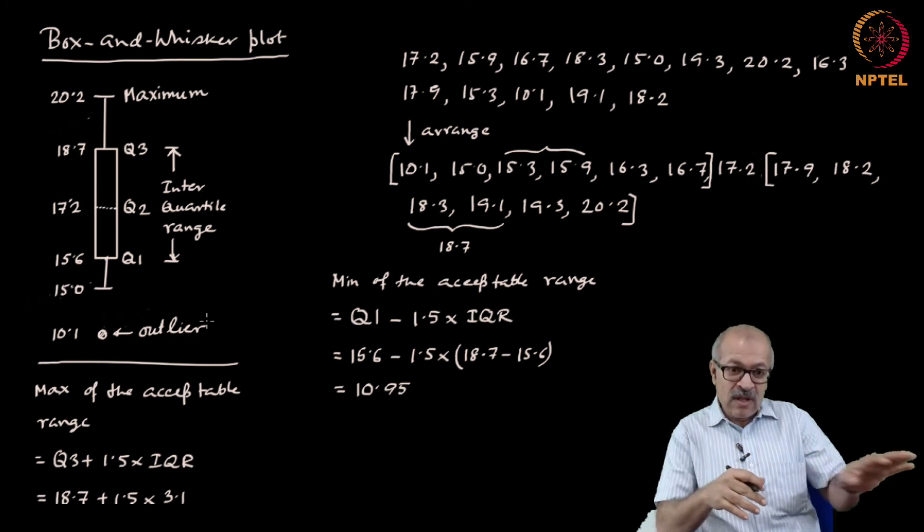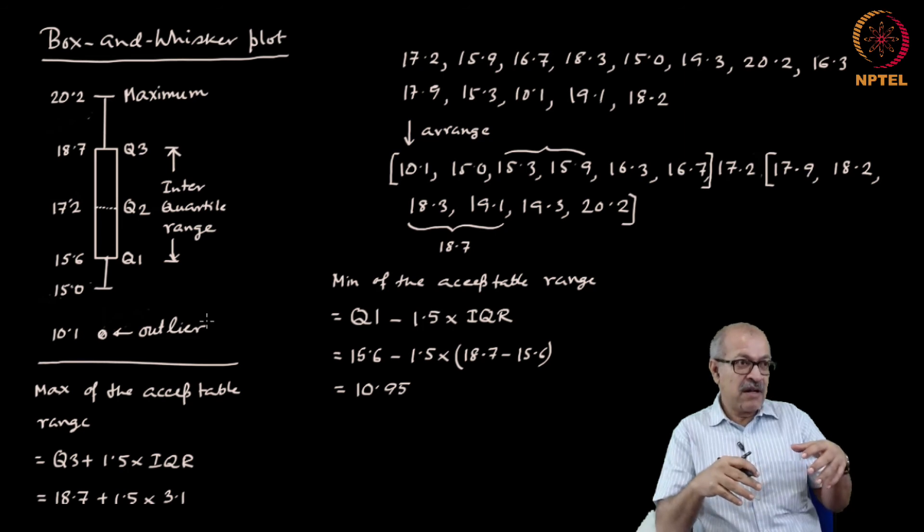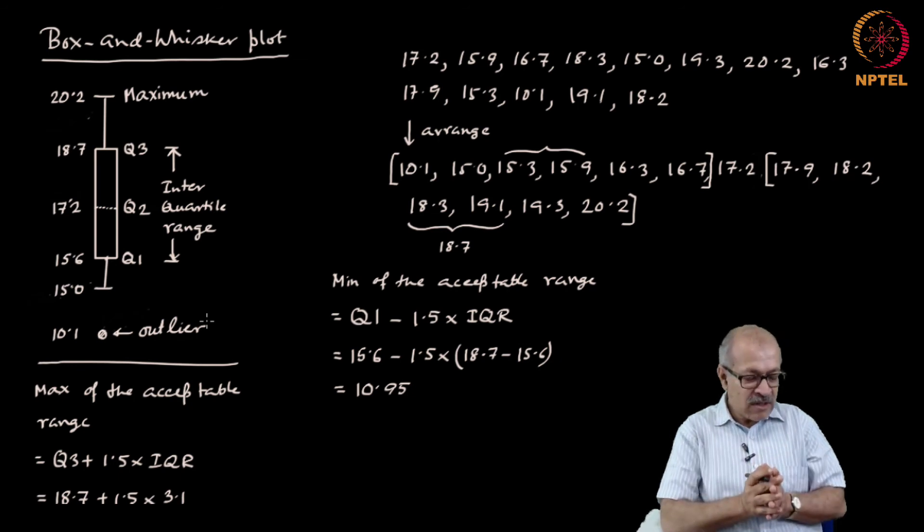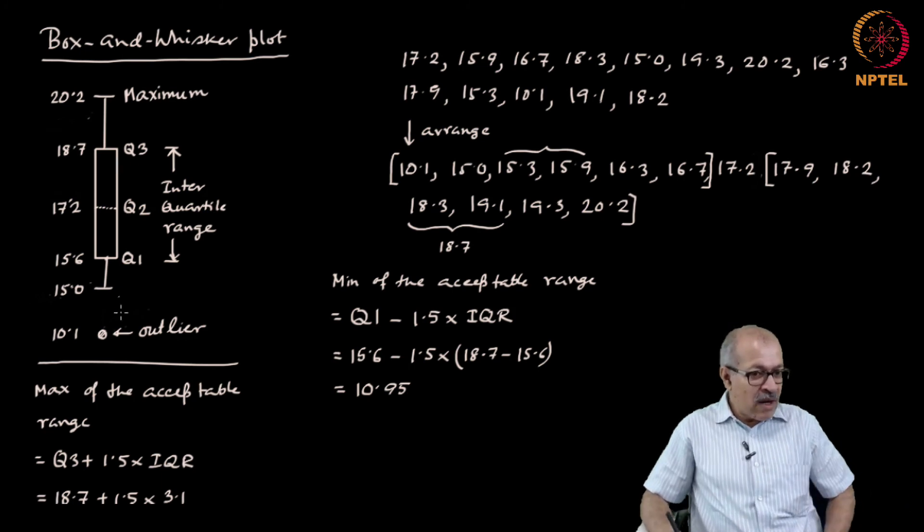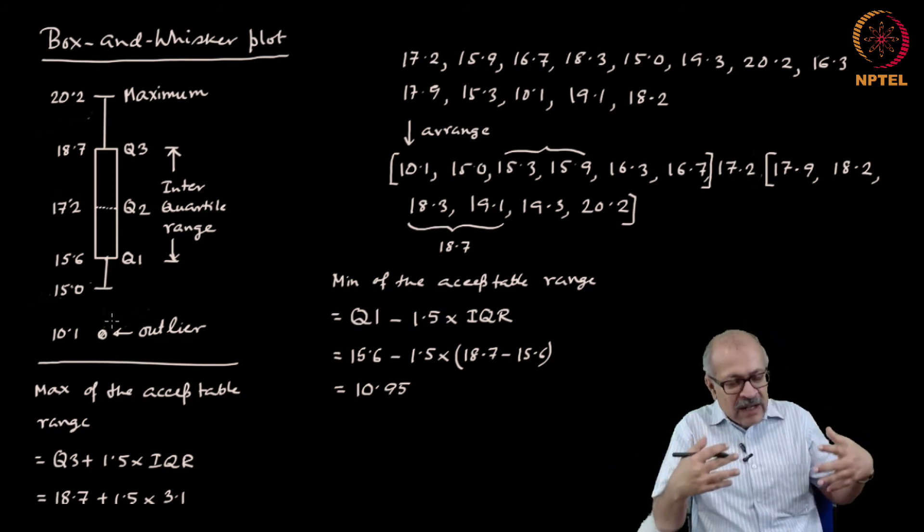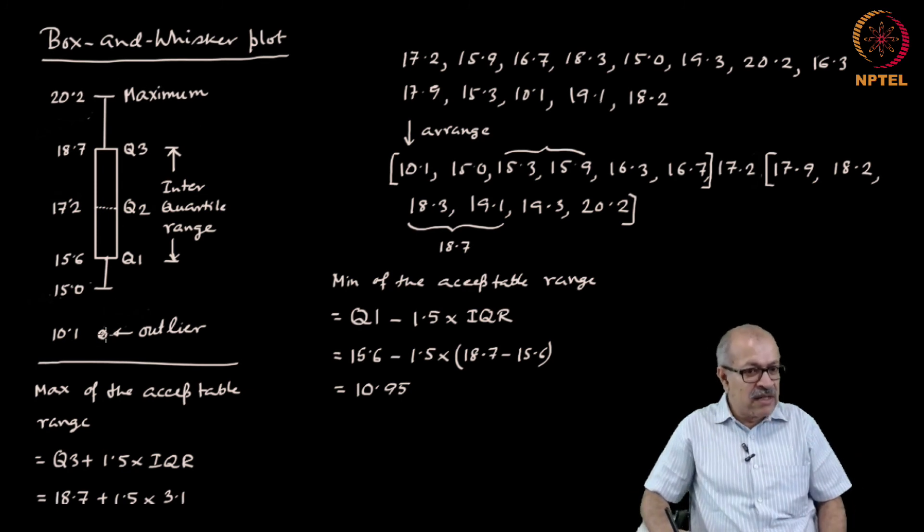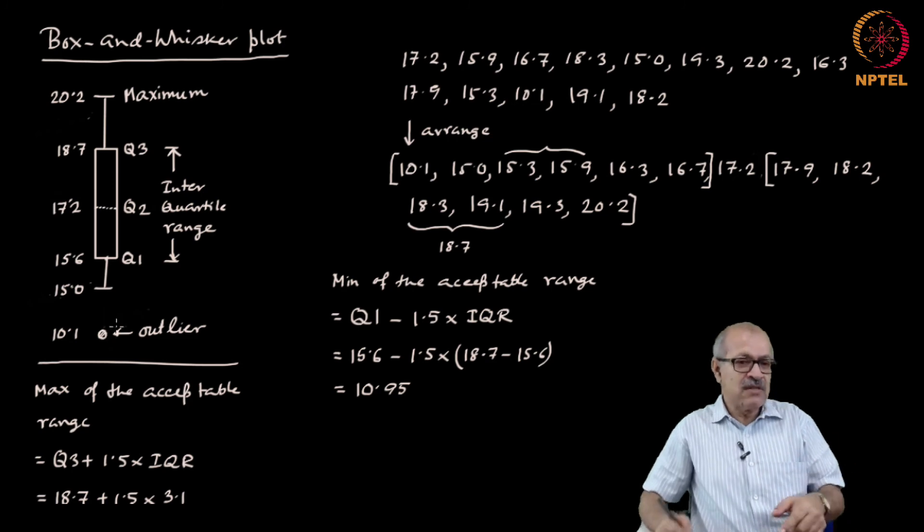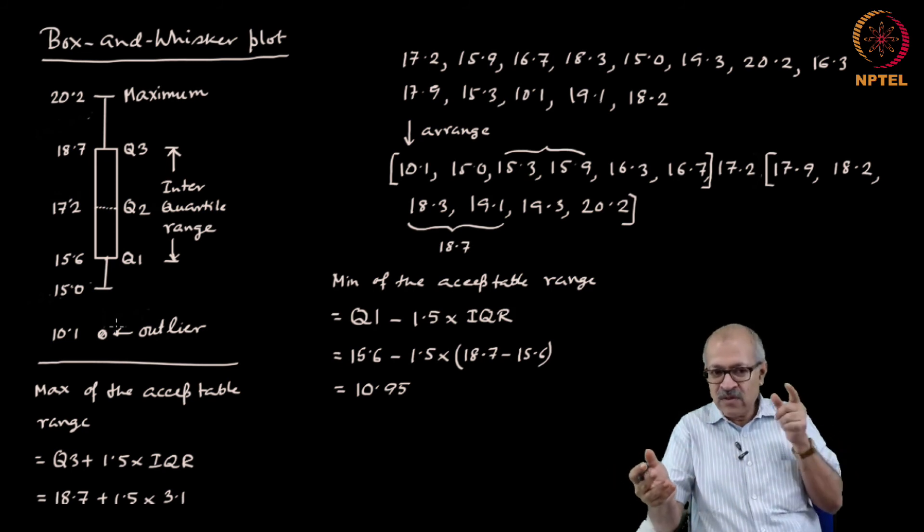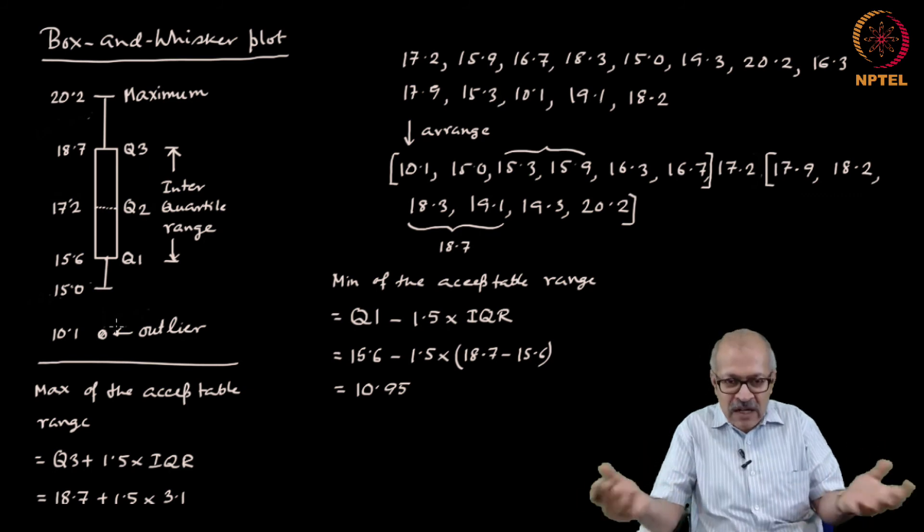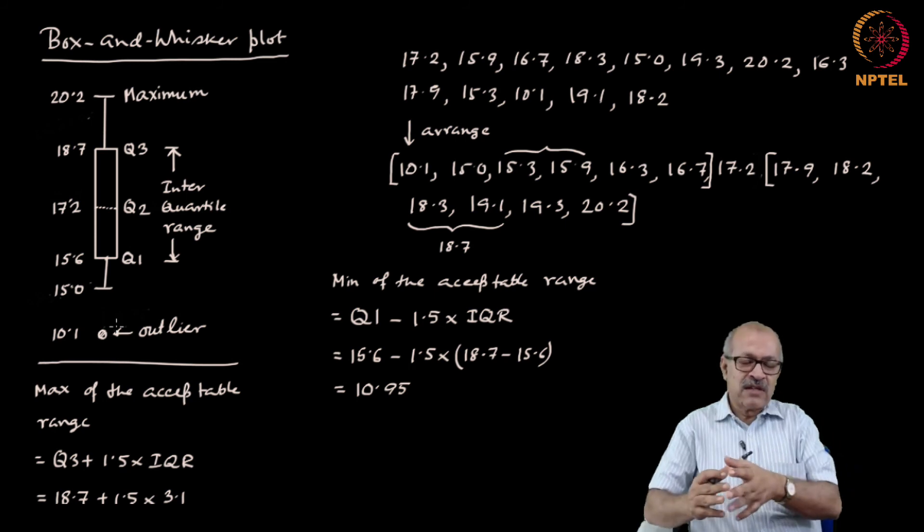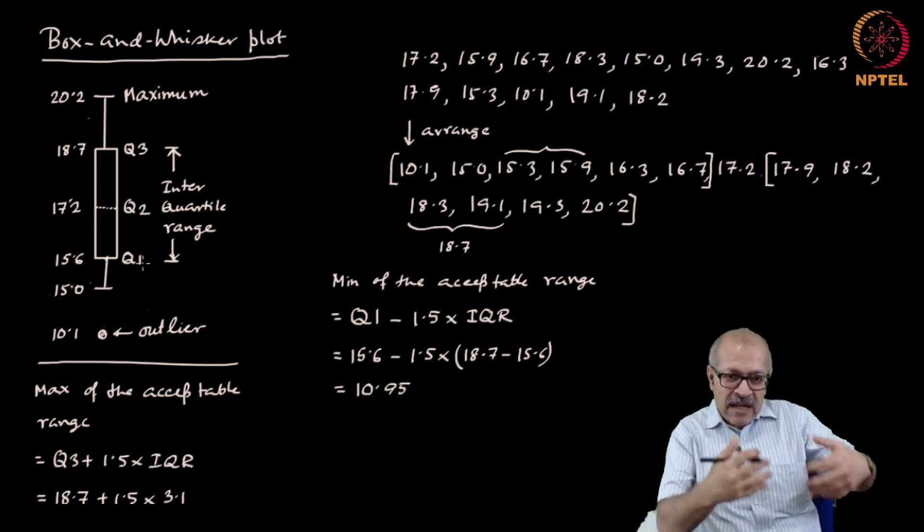Remember, we cannot ignore the outlier. We cannot simply refrain from reporting the data, the outlier. We have to put it in the box and whisker plot so that the reader knows that one data point was obtained like this. We do not know why this data point was there. For the purpose of general calculation, we can go ahead with the rest of the data ignoring this. But this data must be presented in the paper because there is a possibility that this data was actually not an error. But due to some physical process, we got this data and this might provide information for further development of science. Therefore, this should not be masked. This should be presented.